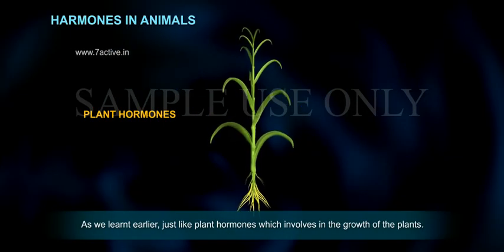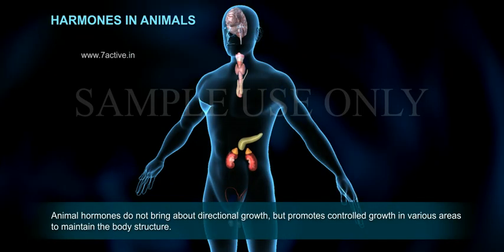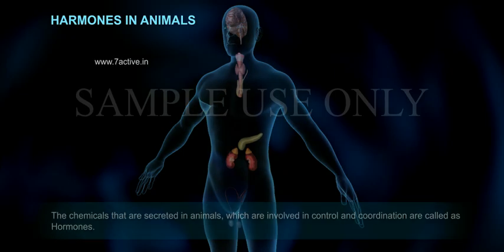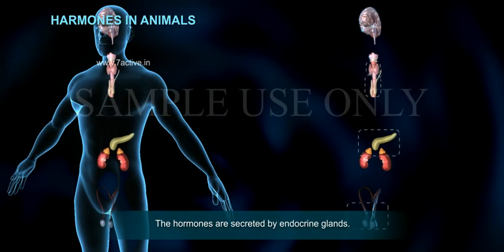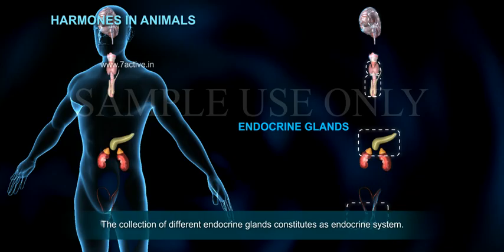Just like plant hormones which are involved in the growth of plants, animal hormones do not bring about directional growth but promote controlled growth in various areas to maintain the body structure. The chemicals secreted in animals that are involved in control and coordination are called hormones. Hormones are secreted by endocrine glands, and the collection of different endocrine glands constitutes the endocrine system.